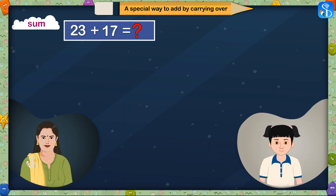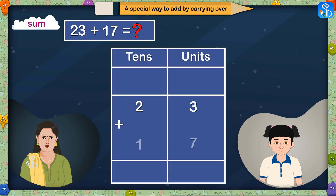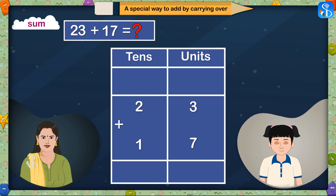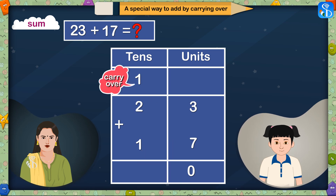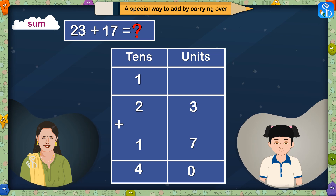Now we will do another addition. 23 plus 17 is equal to — in 23, there are 3 units and 2 tens. And in 17, there are 7 units and 1 ten. First we will add the units. 3 units and 7 units together make 10 units. 10 units make 1 ten — we will write this 1 ten as carry over in tens place. And as there are no units in the units place, we will write 0. There are total 4 tens in tens place. Therefore, 23 plus 17 is equal to 40.